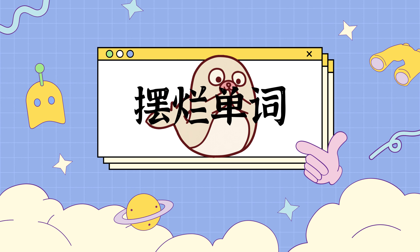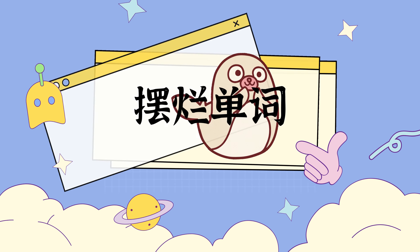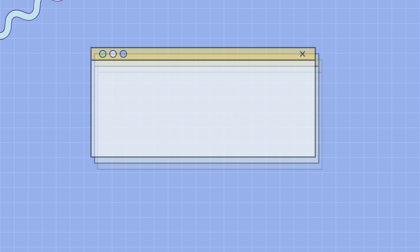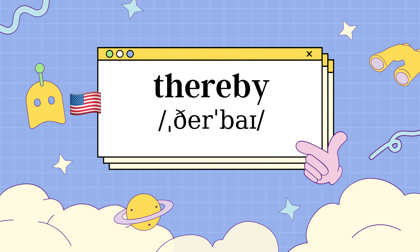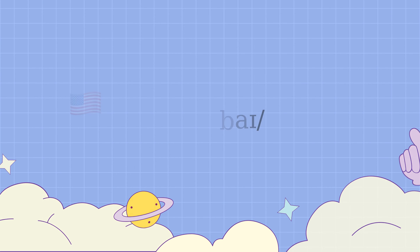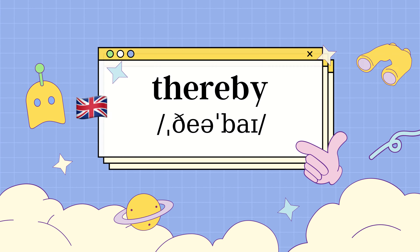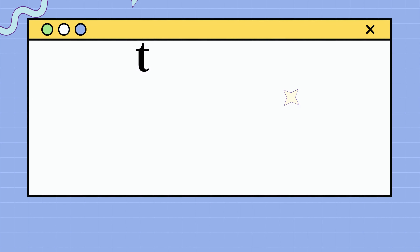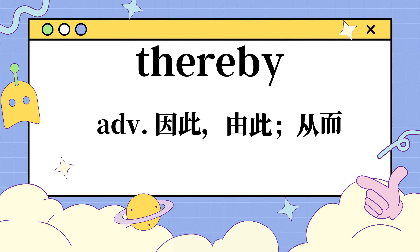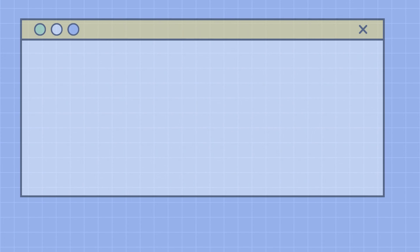摆烂单词不摆烂，快来跟我背单词！现在要学习的单词是 Thereby。这个单词是什么意思呢？它是一个副词，意思是因此、由此、从而。别走神！